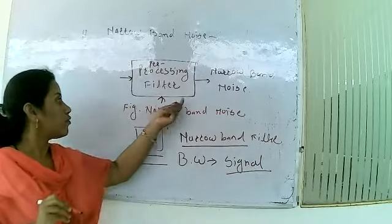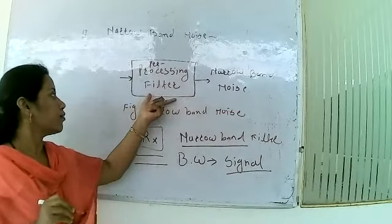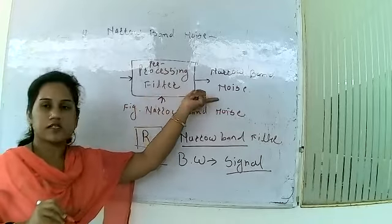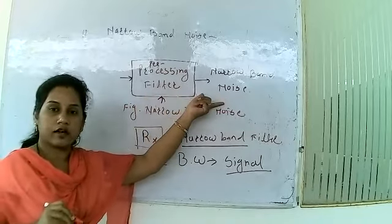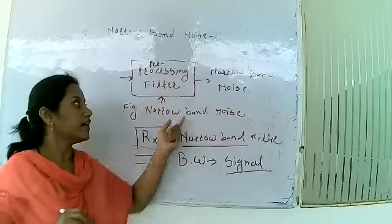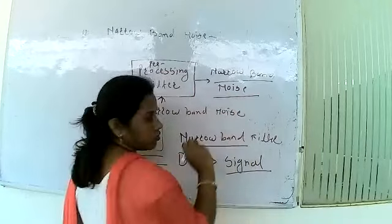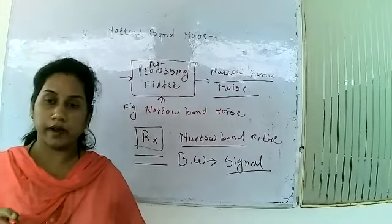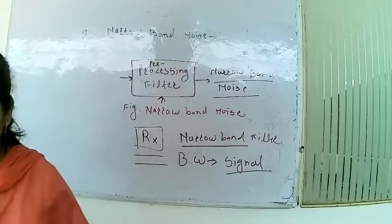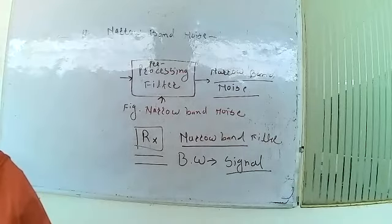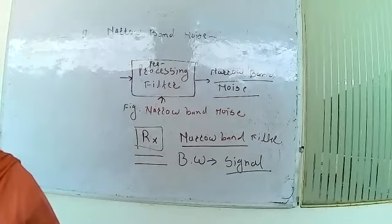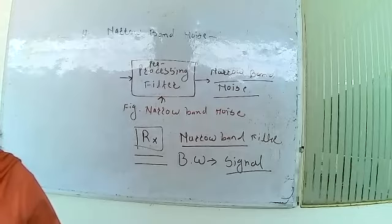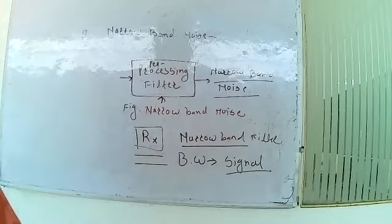The narrow band filter is generally employed for the purpose of pre-processing. The bandwidth for this narrow band filter is just large enough to pass the signals only — not noise. Whatever noise comes at the output of this pre-processing filter is called narrow band noise. The bandwidth is large enough to pass only the signals but not so large as to allow excessive noise.